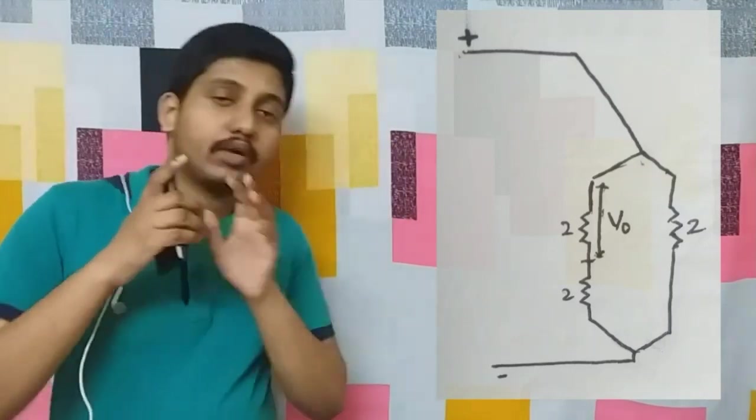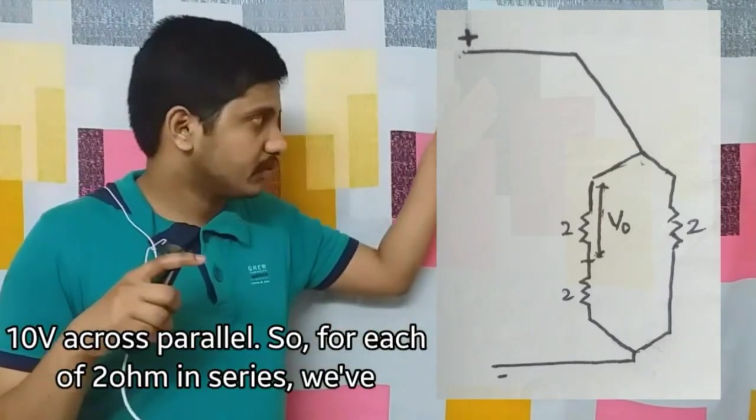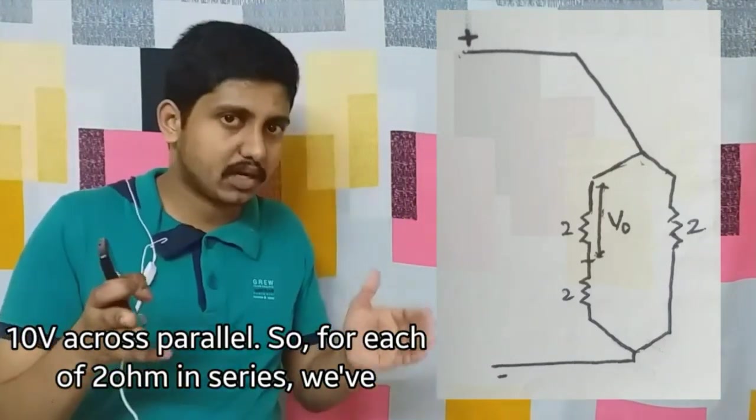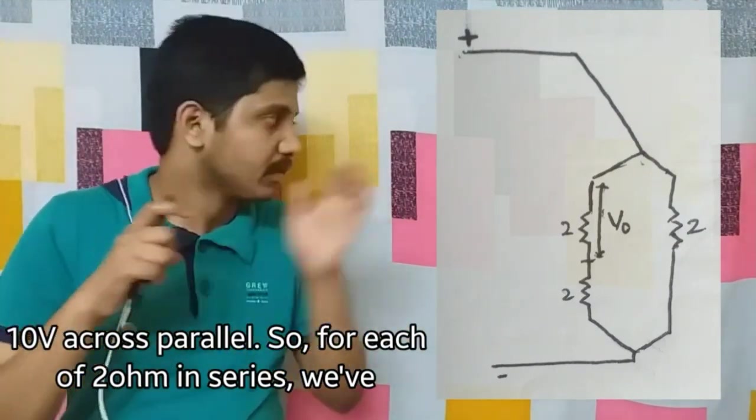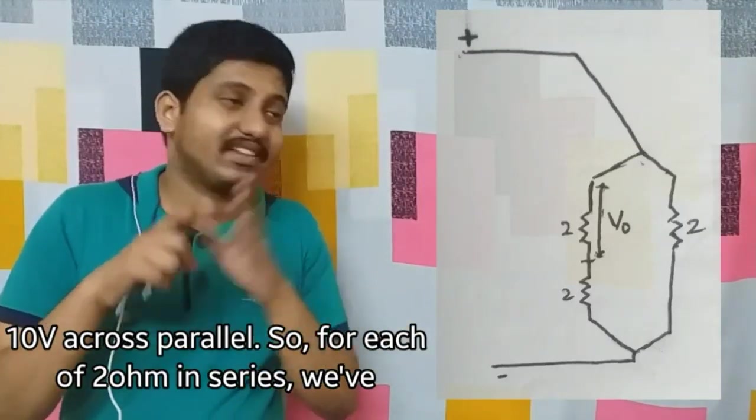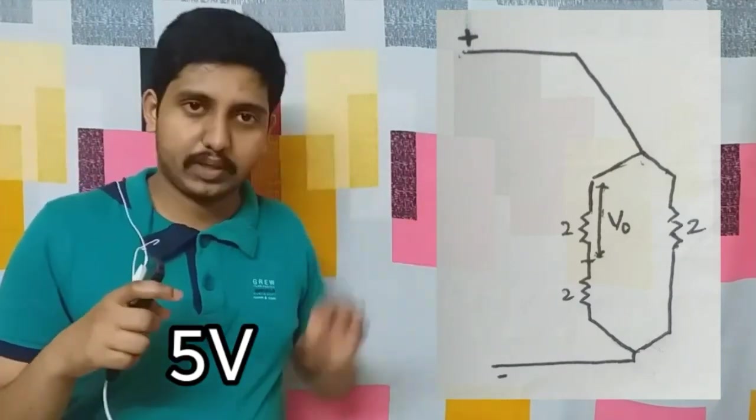These two are 2 ohm resistors. Identical resistors in series will divide the voltage equally. So how much voltage is dropped? 10 divided by 2, so 5V will be the answer.